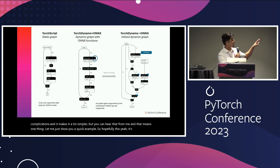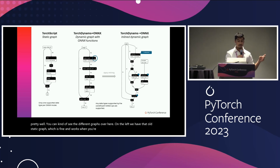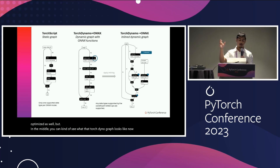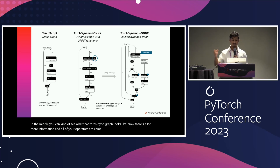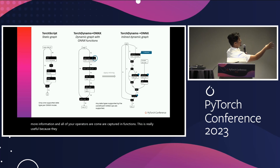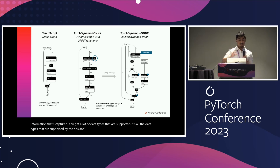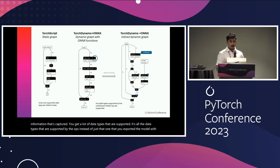You can see the different graphs here. On the left we have that old static graph, which is fine and works when you're exporting models and is somewhat optimized. But in the middle you can see what the Torch Dynamo graph looks like now — there's a lot more information and all your operators are captured in functions. Once you see inline, there's so much more information captured. You get all the data types that are supported by the ops instead of just the one you exported the model with, which is really useful for optimizing later.